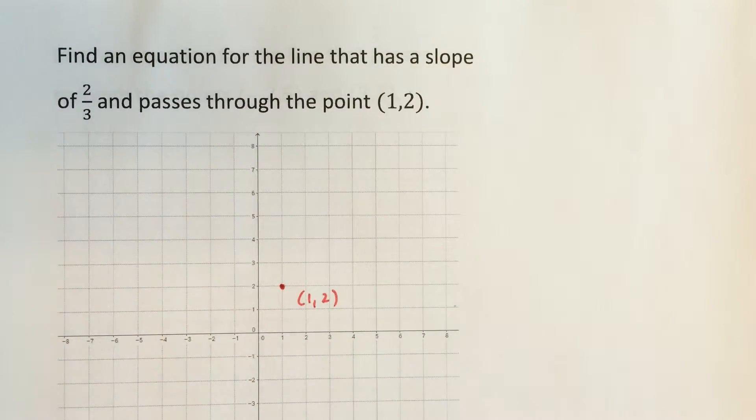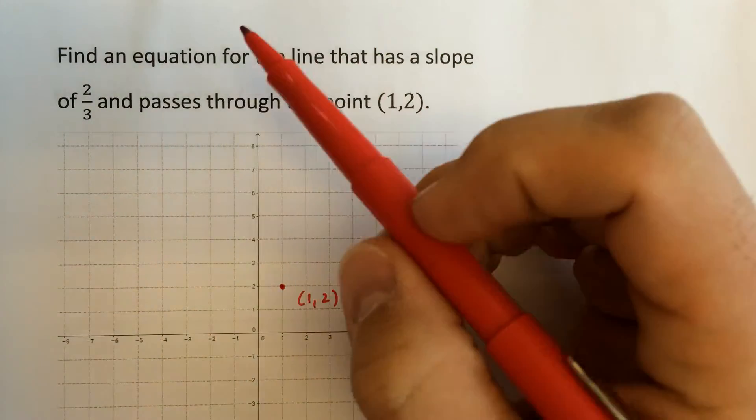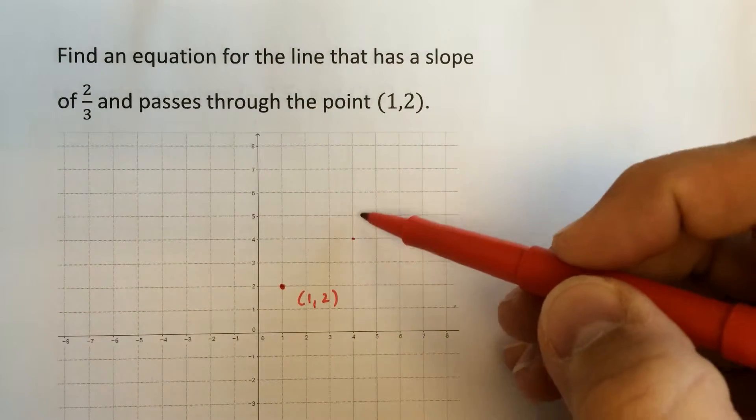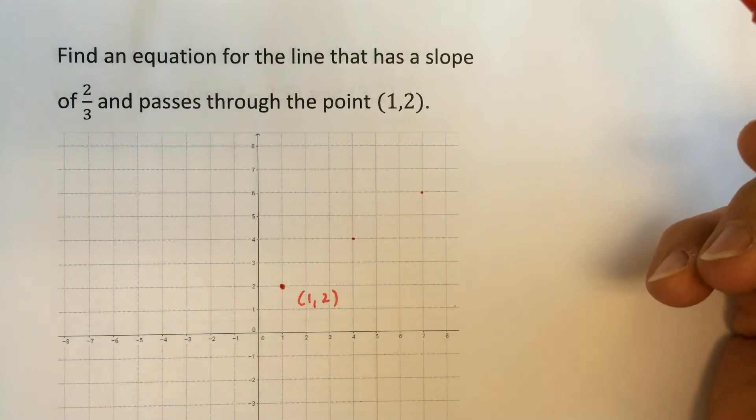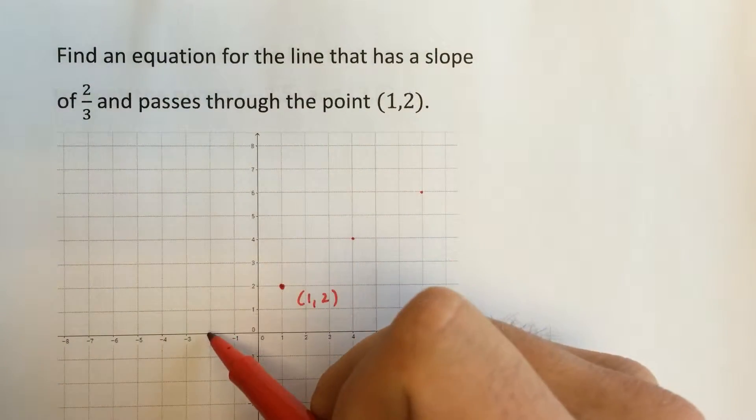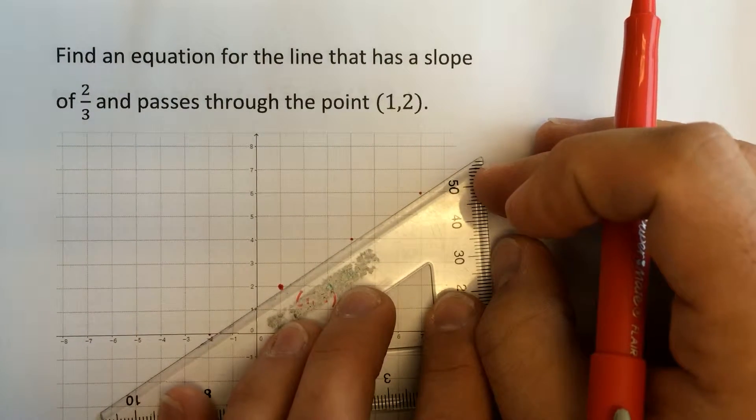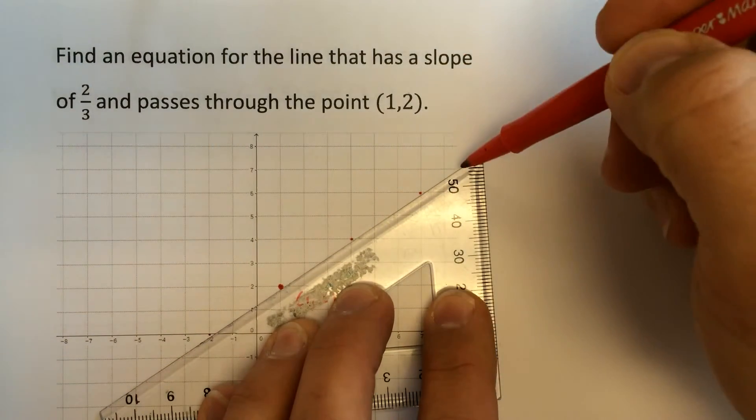And we'll make a quick sketch of this line. It has a slope of two-thirds, so it has a rise of two for every run of three. So for example, these points are going to be on that curve and go in the other direction right there. And let's just connect some dots.